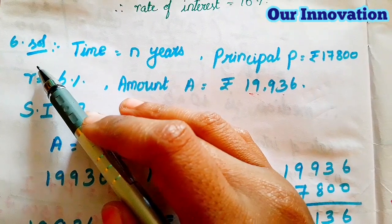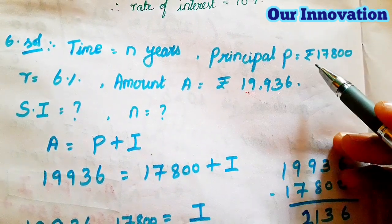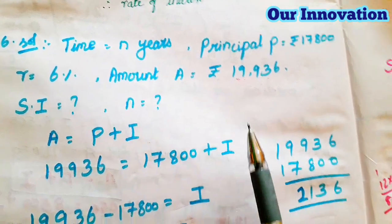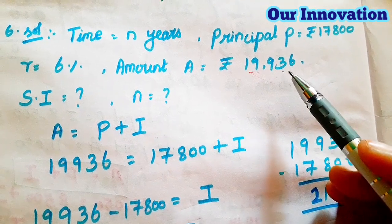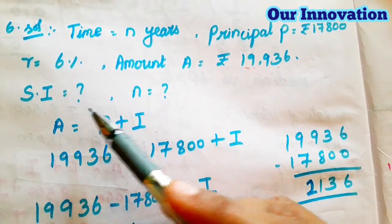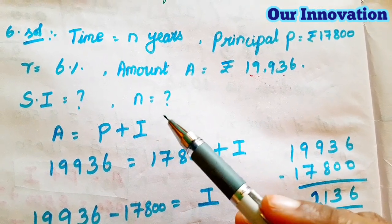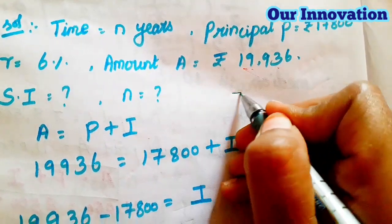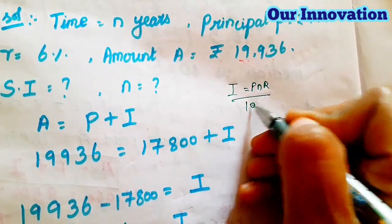Sixth sum solution — time is equal to n. Principal P is equal to ₹17,800, r is equal to 6%, and amount A is equal to ₹19,936. To find simple interest, we use the formula: I = PNR/100.